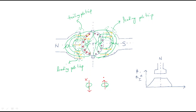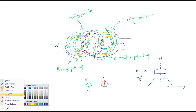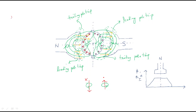At the trailing pole tip, both fluxes are added together. At the leading pole tip, the fluxes are in opposite directions. At the leading pole tip, the main flux decreases because both are opposite to each other, and this process is called demagnetization.